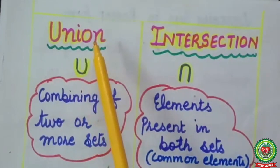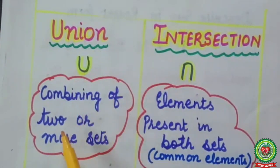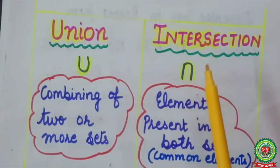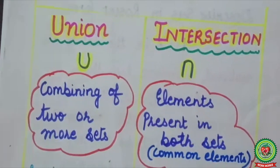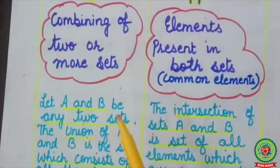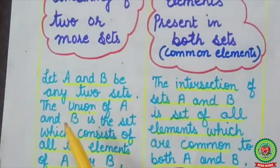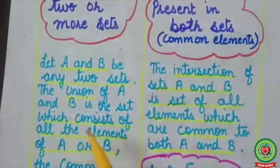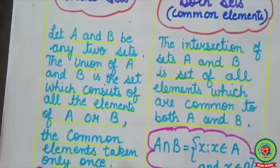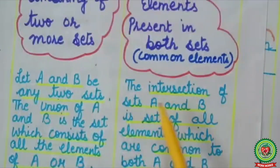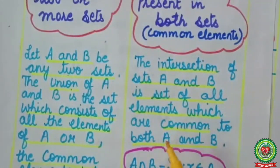The symbol ∪ stands for union of sets, which means combining of two or more sets. The symbol ∩ stands for intersection, which means elements present in both sets — you can say common elements. If A and B are any two sets, then the union of A and B is the set which consists of all the elements of A or B, with common elements taken only once. The intersection of sets A and B is the set of all elements which are common to both A and B.